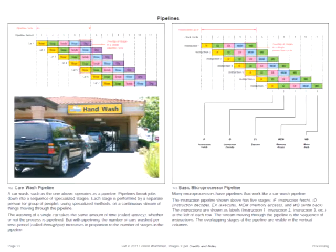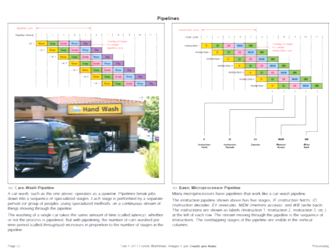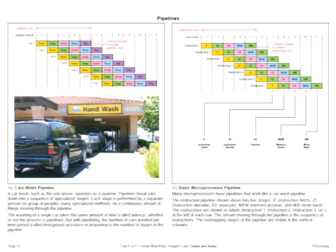Pipelines are very common in cities and look almost identical to a microprocessor pipeline. This is a car wash pipeline: car number one goes through five stages of processing, each typically done by a specialist with special tools. In pipeline period five, all five stages are being performed on different cars simultaneously. The washing of a single car takes the same amount of time — called the latency — whether or not the process is pipelined. But with pipelining, the number of cars washed per time period, called the throughput, increases in proportion to the number of stages.